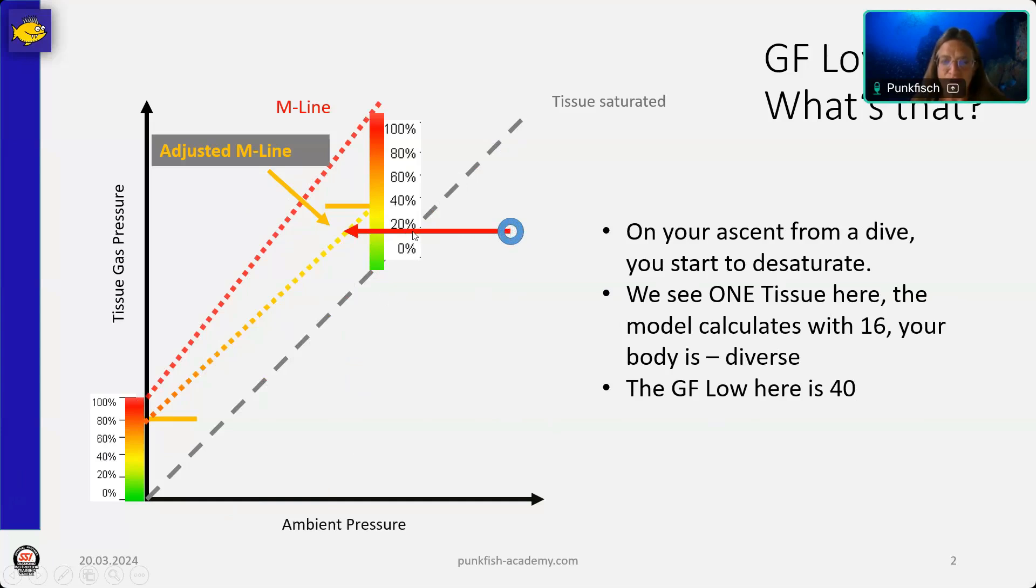And once we are at a shallower depth, at a lower ambient pressure than the pressure in our tissues, which is this point, then we slowly start to desaturate. And we will now ascend, move towards a lower ambient pressure until we reach this 40% line, the 40% gradient factor low. And this is the moment where we have to stop and wait and ascend again a little bit and stop and wait and ascend again a little bit until we reach the surface without crossing this adjusted M line, which is constituted from our gradient factor low and gradient factor high.